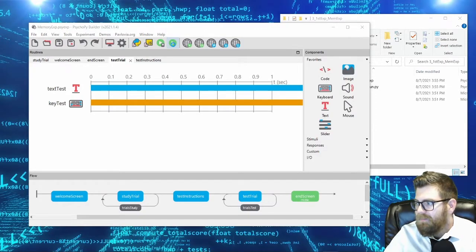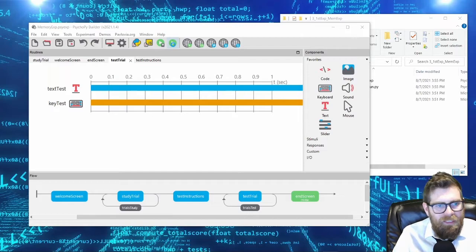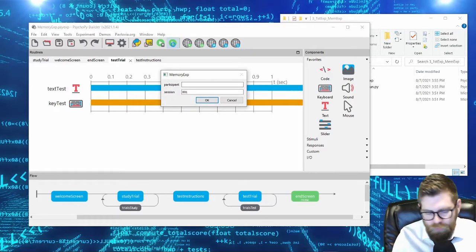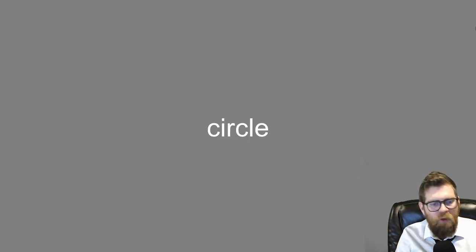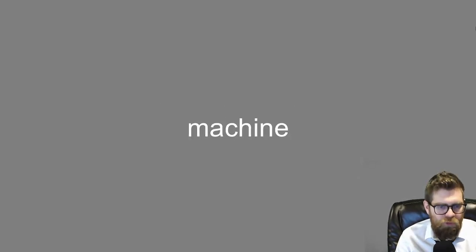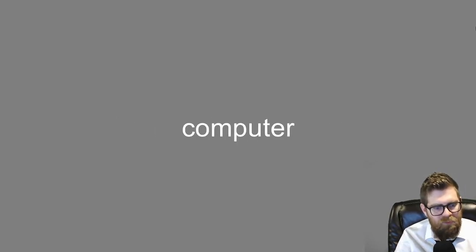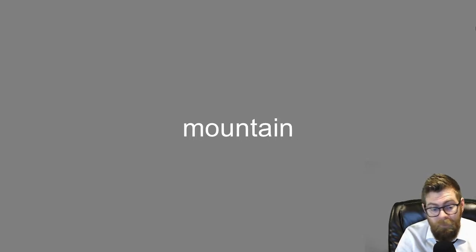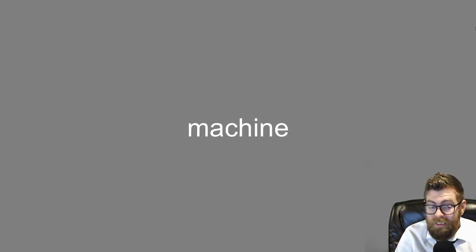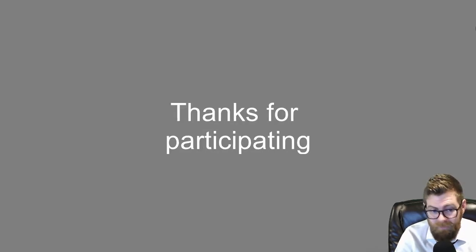Running the experiment: we see the welcome screen, then words appear — mountain, circle, computer, machine, green, hill. Then 'Get ready for our test.' At test, for each word we respond yes or no: computer (yes), green (yes), country (no), mountain (yes), machine (yes), circle (yes), Android (no), hill (yes), button (no). The experiment works as expected.